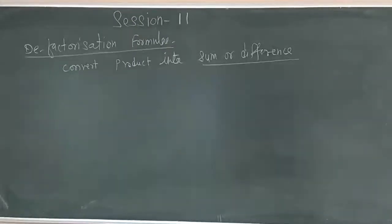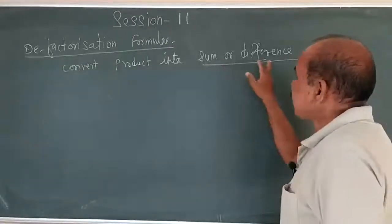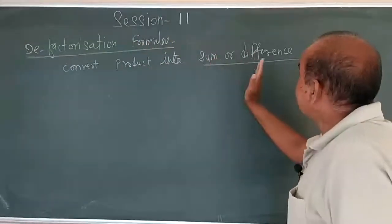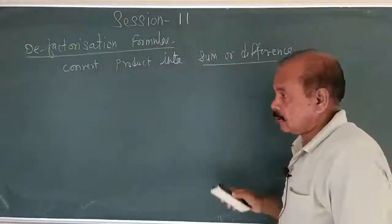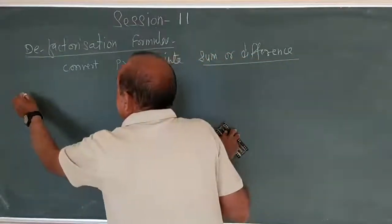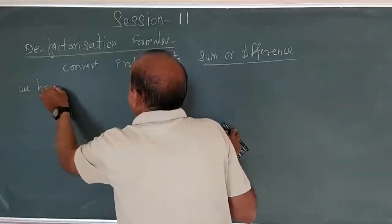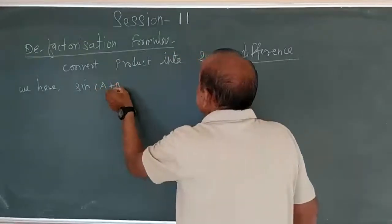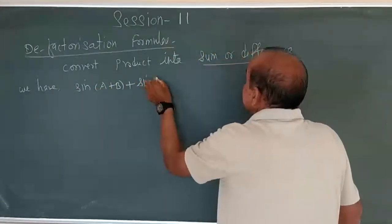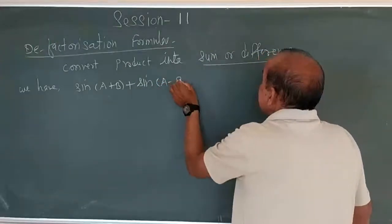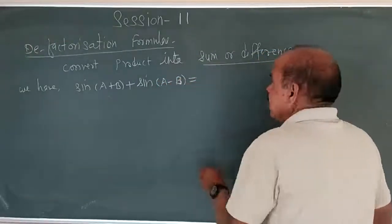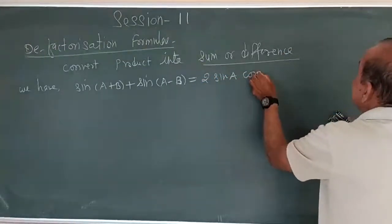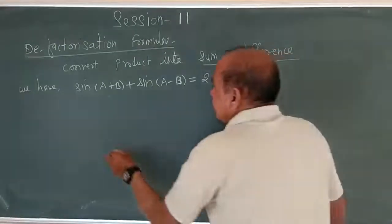De-factorization formulas: convert product into sum or difference, and now convert sum or difference into product. We know the formulas. The first de-factorization formula: sin A plus B plus sin A minus B equals 2 times sin A cos B. That is your first formula.